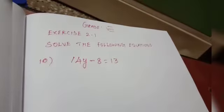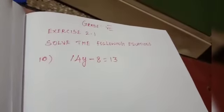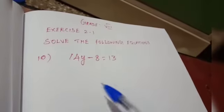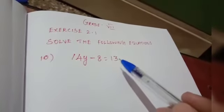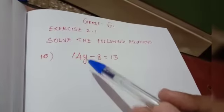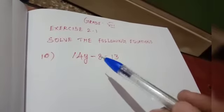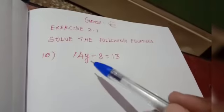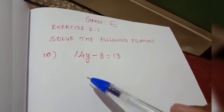Namaste children, I hope you all are fine. Now I am going to explain how we have to solve the linear equation. Here, this is the 10th sum from exercise 2.1. The question is 14y minus 8, that is equal to 13. To find the unknown, first we have to bring the constant term to the right side. Then we can find the unknown value. Here I am going to use the transposing method.